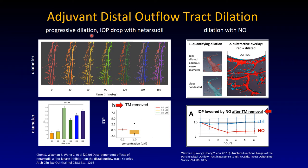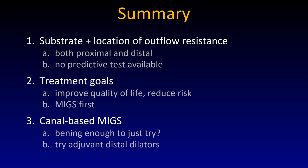One could use adjuvant distal outflow tract dilation substances — for instance Rho-kinase inhibitors. This shows how over time the distal outflow tract can be dilated after instilling netarsudil: the diameter increases and the IOP drops after trabecular meshwork removal. One could also use a nitric oxide donor. SD-OCT shown as a red overlay on blue demonstrates how vessels of the distal outflow tract dilated after giving NO, and there is a pressure drop after meshwork removal combined with NO — a structural change and pressure drop that fit together.